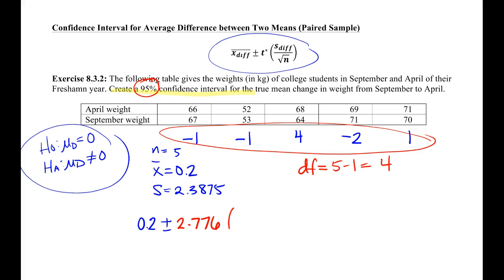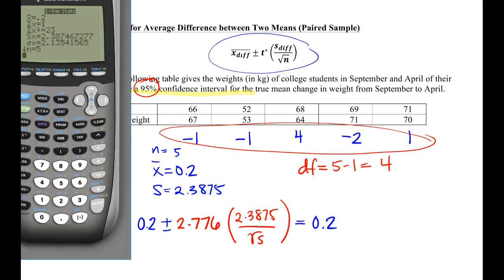Recovering from dropping things on my head. And then we have our S, 2.3875, divided by the square root of N. So we've got our margin of error in red and our point estimate. So 2.77...